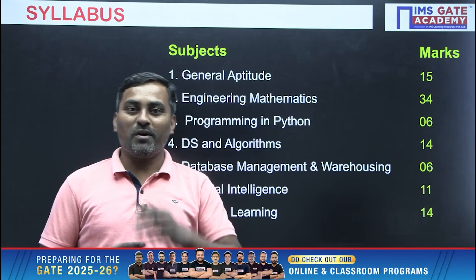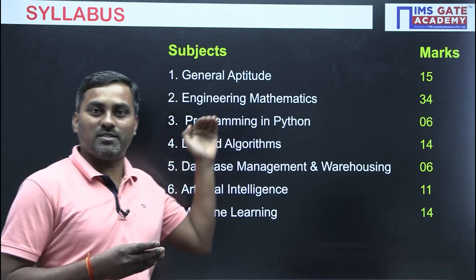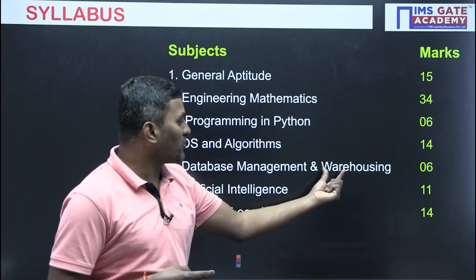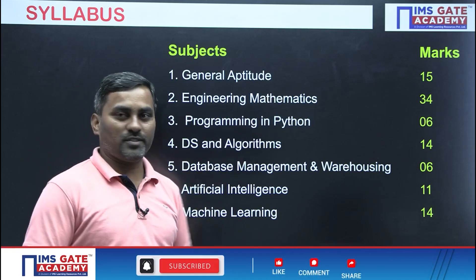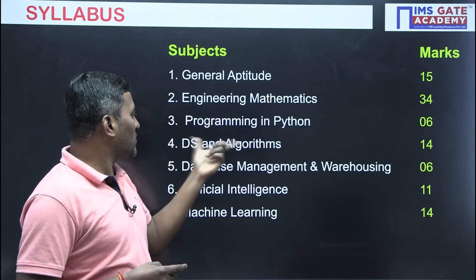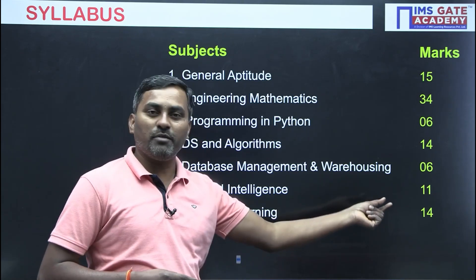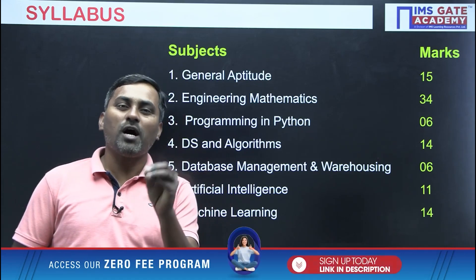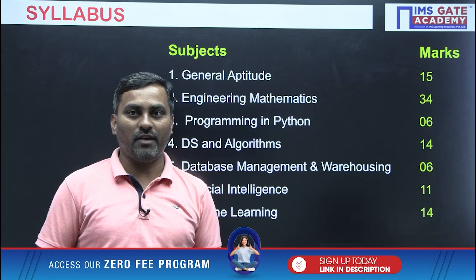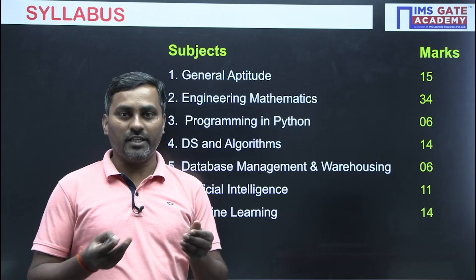Computer Science aspirants should note that most of the DA syllabus is common with CSE — except Artificial Intelligence, Machine Learning, and some extra Mathematics topics. General Aptitude, Programming in C, Data Structures and Algorithms, and DBMS are common topics. So around 65 to 70 marks are common between the CS and DA papers.